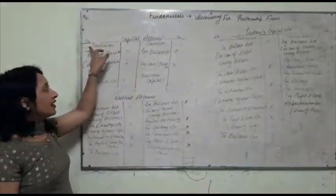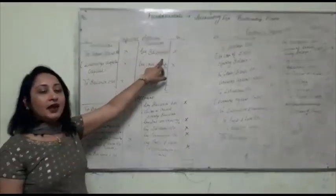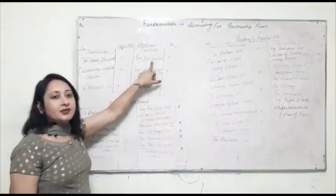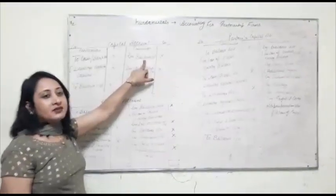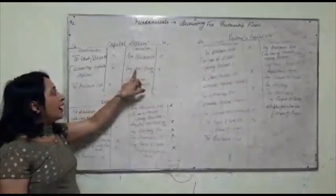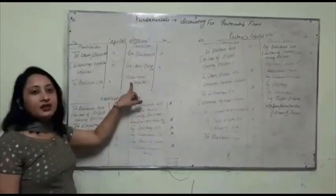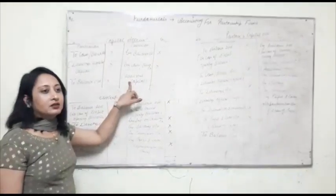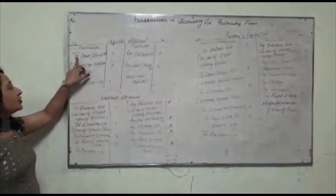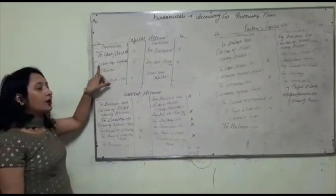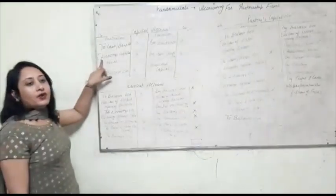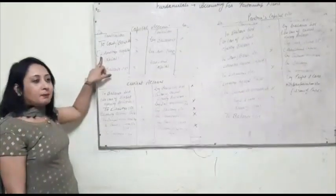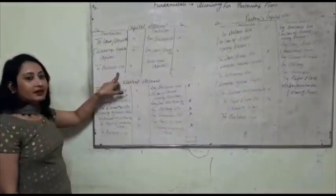The capital account has two sides: debit and credit. On the credit side: by balance brought down, meaning the initial capital invested by the partners in the firm; and by cash or bank, meaning additional capital introduced during the year. On the debit side: to cash or bank, meaning permanent withdrawal of capital by the partners; and to balance carried down.